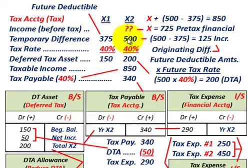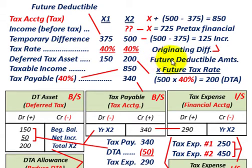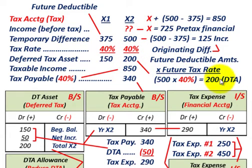Moving over to year X2, this temporary difference actually increases from $375,000 to $500,000. That $500,000 is now our future deductible amount. You take it times the future tax rate of 40%, and that gives you a deferred tax asset of $200,000 — future deductible amount times the future tax rate: $500,000 times 40% equals $200,000.